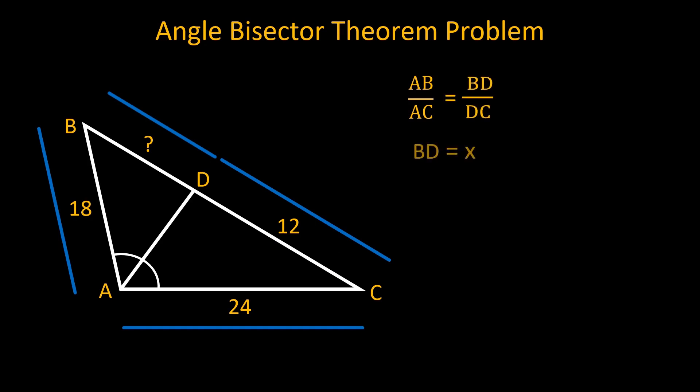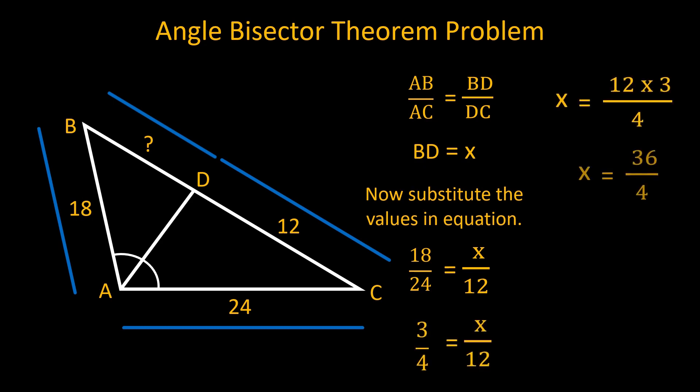Now substituting the values we get 18 over 24 is equal to x over 12. By simplifying this equation we get x is equal to 9 centimeter.